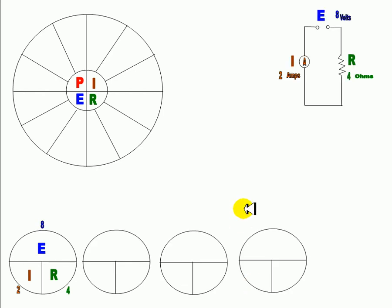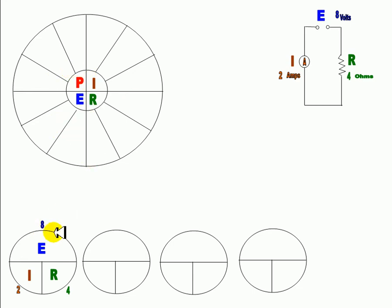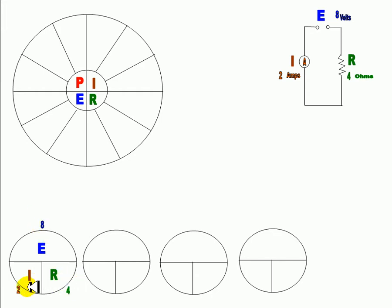All right, gentlemen, we're going to start talking about this chart here. It's going to be 12 formulas — 6 here and 6 there. And as you can see, this is concerning Ohm's Law. I put numbers here on the side like 2, 4 — 2 times 4 is 8. 8 divided by 4 is 2, and 8 divided by 2 is 4. This is Ohm's Law.